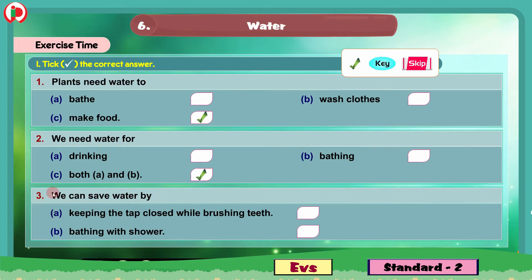Question 3: We can save water by dash. The options are A. Keeping the tap closed while brushing teeth, B. Bathing with a shower. The correct answer is option A. We will put the tick mark here. We can save water by keeping the tap closed while brushing teeth. So this is about the first bit.